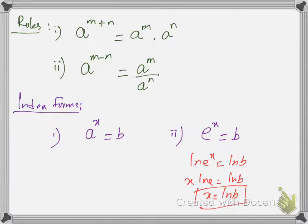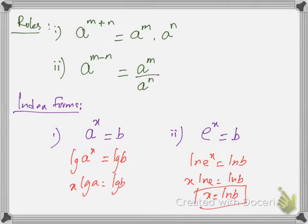When we don't have e, like in standard form number 1, then we usually take log on both sides instead of LN. We take LN when we have e in the index form. So x = LN B / LN A. This is the way to solve the standard index forms.